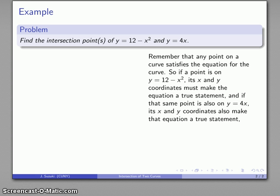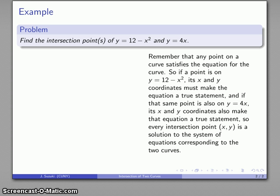And if that point is also on the graph of y equals 4x, the x and y coordinates have to make that statement also true. So what does this tell us? Well, an intersection point is a point that is on the curve y equals 12 minus x squared and also on the curve y equals 4x. Well, that intersection point's x and y coordinates have to make this a true statement and they also have to make this a true statement.